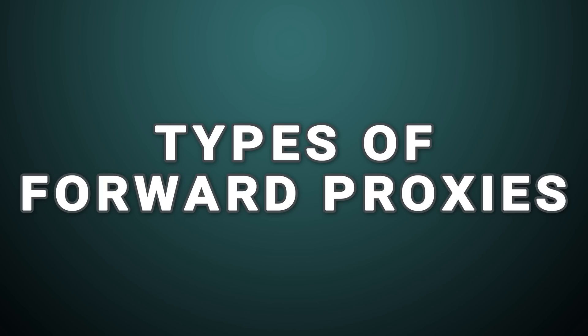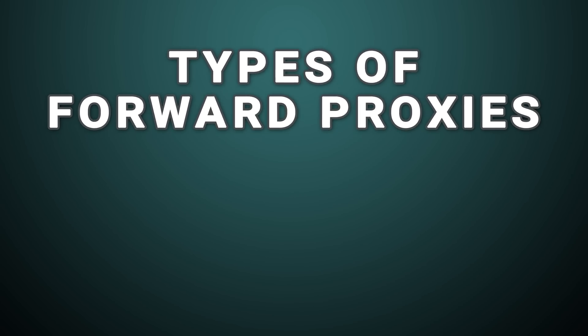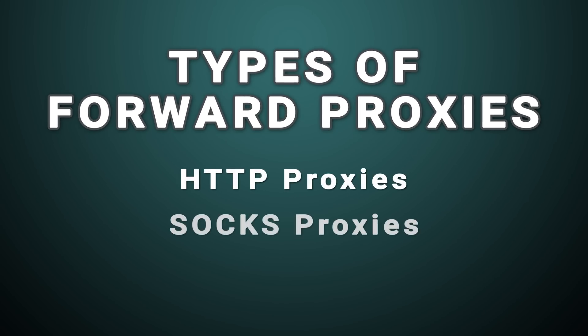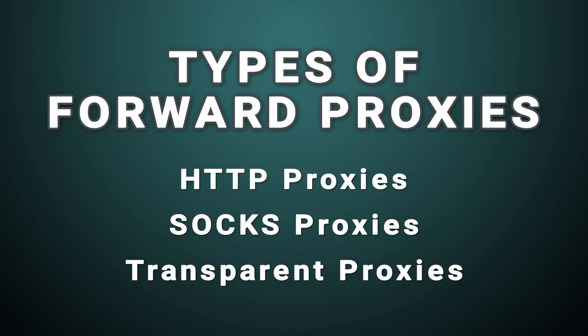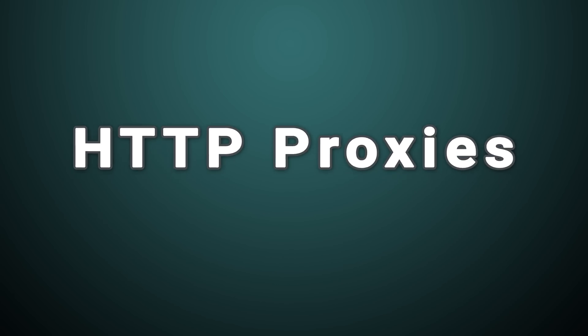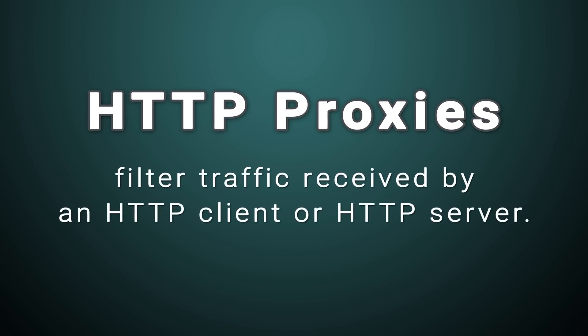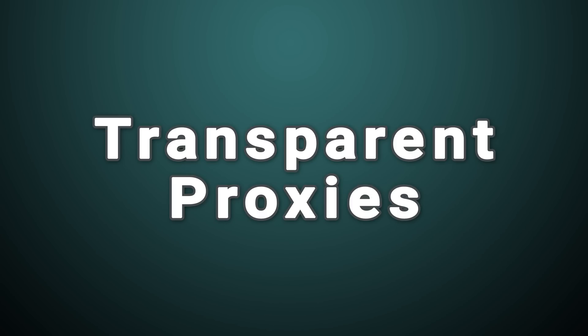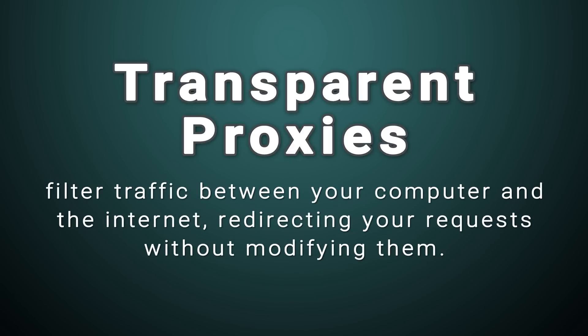Forward proxies are used to protect client machines from exposure online. While there are many types of forward proxies, generally speaking the most popular are HTTP proxies, SOCKS proxies, and transparent proxies. HTTP proxies protect HTTP, or Hypertext Transport Protocol, traffic, which includes most of the activity performed on the web by browsers. Transparent proxies are typically deployed at the network level and provide proxy services without clients even being aware of their existence.